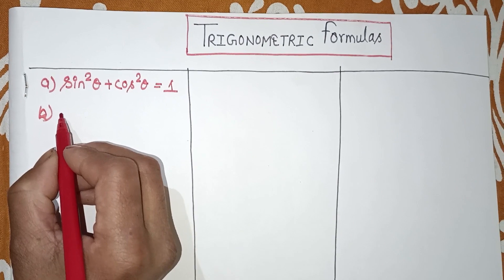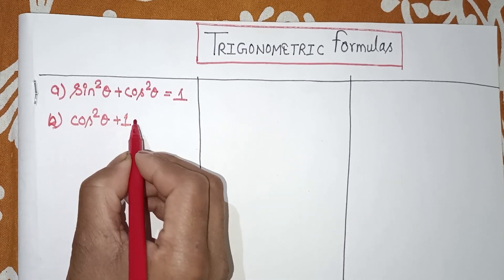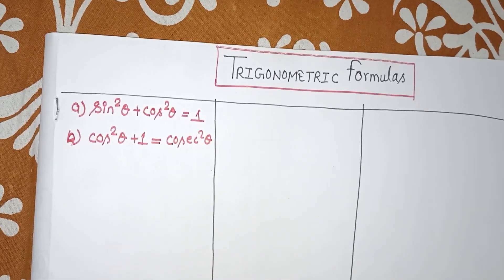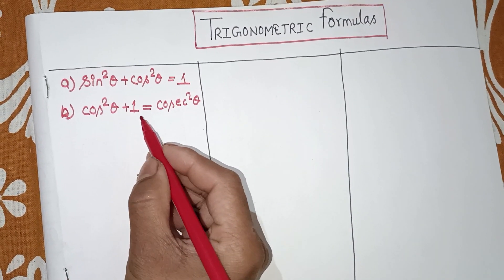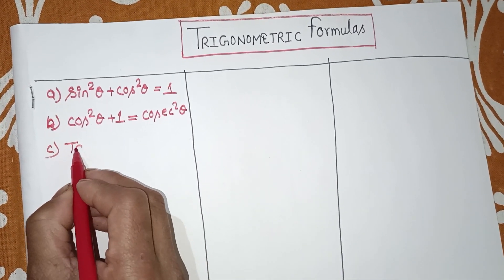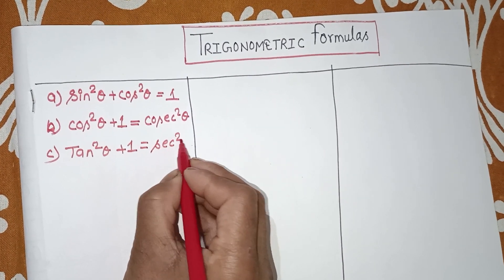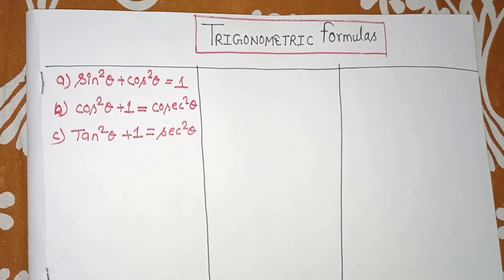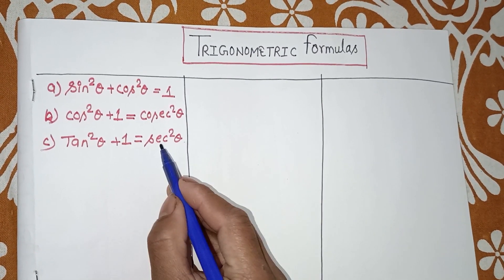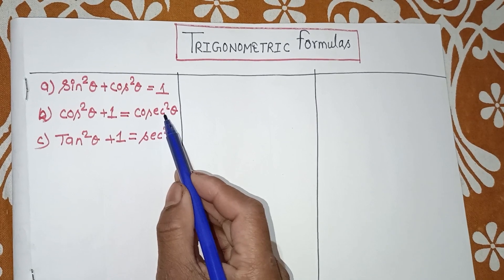The second formula is 1 + tan²θ = sec²θ. And the third formula is 1 + cot²θ = cosec²θ. These are the three basic formulas which we have to remember. If you haven't seen our previous videos, I will show you some examples and explain that sec θ relates to cos θ — these are identities we need to be familiar with.